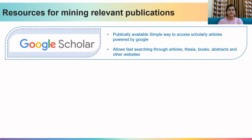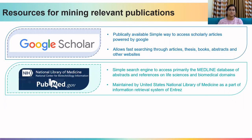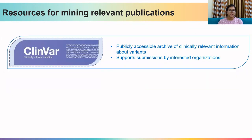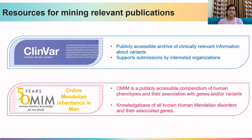Google Scholar is a very simple way to access scholarly articles. It allows fast searching through articles, theses, books, abstracts, and other websites. PubMed also allows fast searching through the Medline database of abstracts and references, and is maintained by the United States National Library of Medicine. PMC is another database which has freely available full-text articles. ClinVar is an archive of critically relevant information about variants, supports submissions by interested organizations, and is updated regularly. OMIM is a publicly accessible database with a compendium of human phenotypes and their associations with genes and/or variants.